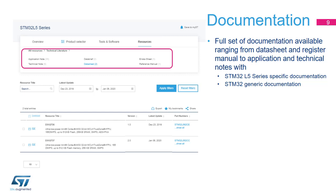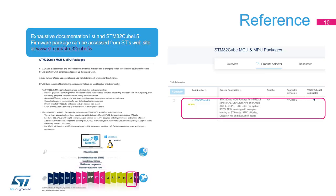Rich documentation is associated with the STM32CubeL5 firmware package. Some documents are generic to all STM32 series, and others are specific to the STM32L5 series. The Getting Started with STM32CubeL5 Firmware Package User Manual is the document to read first when starting with the STM32Cube Firmware Package. The STM32CubeL5 firmware can be downloaded from the ST website at www.st.com/STM32CubeFW.